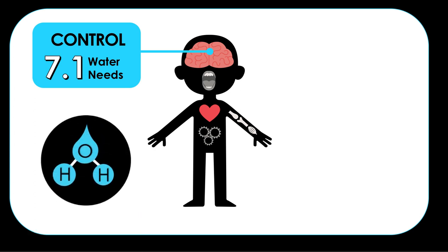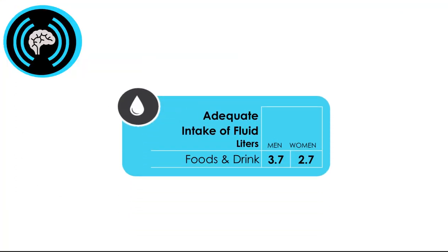Daily water needs for humans were established by doing all types of research, but the actual value published in the DRI is an adequate intake value. This means they surveyed healthy men and women adults and found they were consuming on average about this much daily. Since they were generally healthy people free of disease, we can assume this is an adequate level of intake. The adequate intake isn't the most precise — it isn't based on lab measurements of fluid losses — it's just from survey data assuming these folks are healthy.